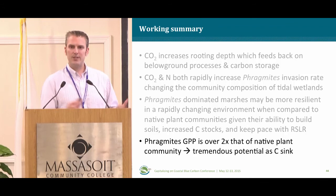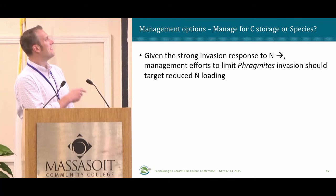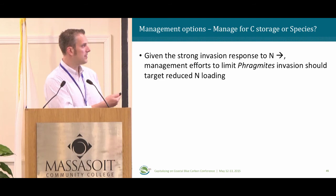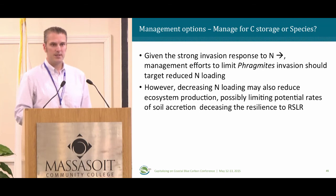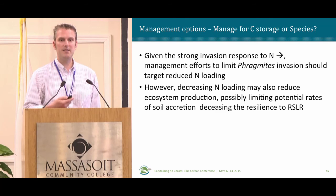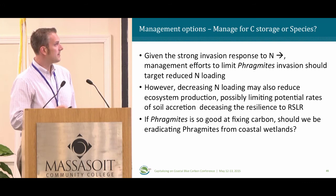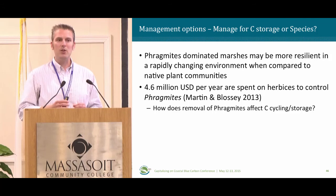This changes things: Phragmites is a nuisance, but it also represents a tremendous carbon sink. Given the strong invasion response to nitrogen, if we want to limit Phragmites we may want to limit nitrogen from hitting coastal ecosystems — and the data is very robust on this. However, decreasing nitrogen loading is also going to reduce ecosystem production, possibly limiting rates of soil accretion and decreasing resilience to relative sea level rise. Should we even be eradicating Phragmites from coastal wetlands if Phragmites-dominated wetlands may be more resilient in a rapidly changing environment?